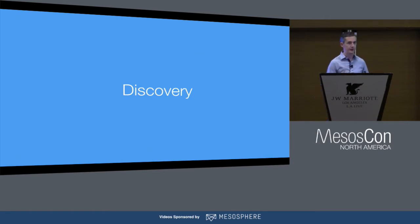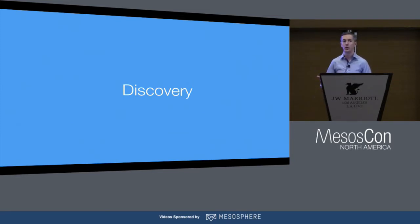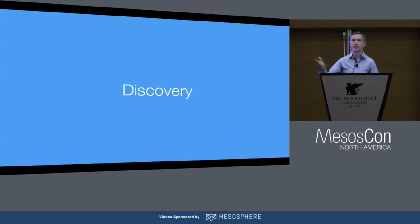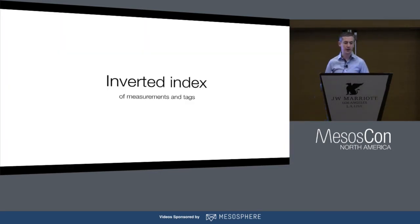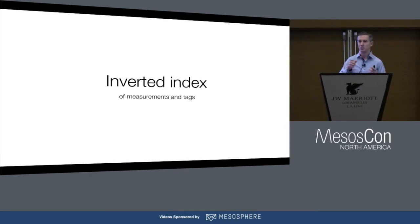With the time series use case, we found that in addition to querying the raw time series data and getting summaries, discovery actually becomes pretty important — especially in infrastructure monitoring where you could have thousands of servers and a bunch of different services. You may not even know what data is available for you to query. We wanted to make sure that people could do discovery on what data exists. For that, we basically have a separate part of the database which is essentially an inverted index.